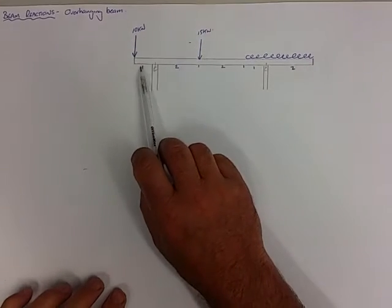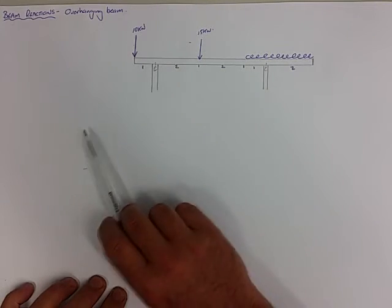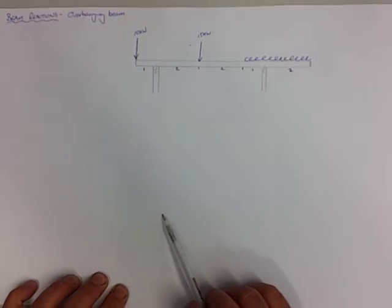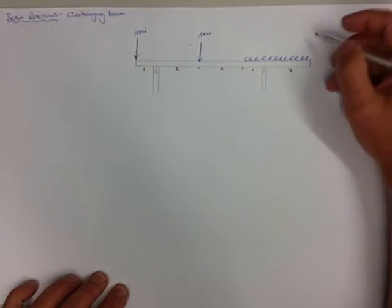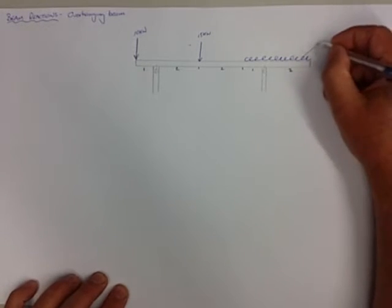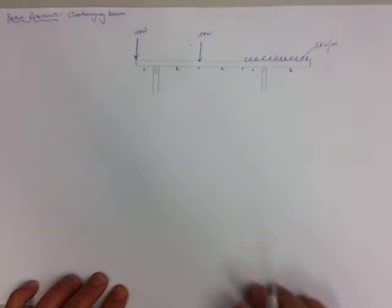Again we've got our overhanging beam, overhanging one meter at one end, overhanging two meters at the other end. We have a 10 kilonewton force, a 15 kilonewton force and a UDL. I haven't put a weight in that so we'll just say that that's five kilonewtons per meter.